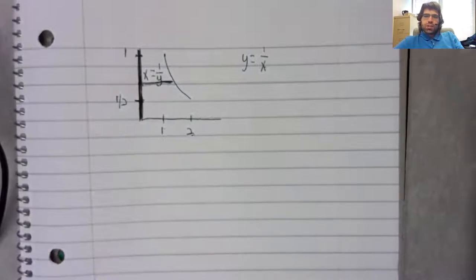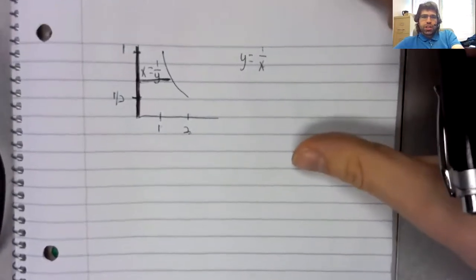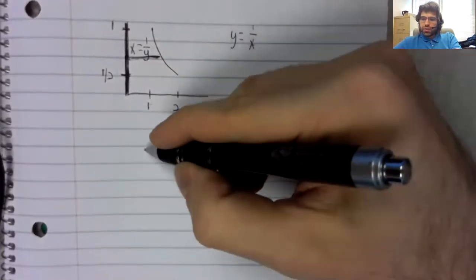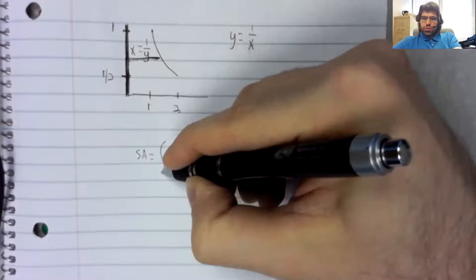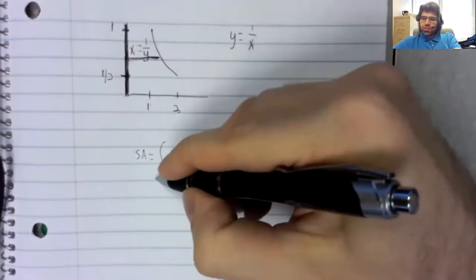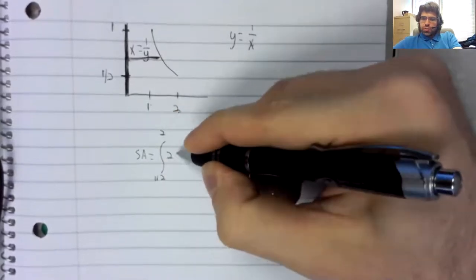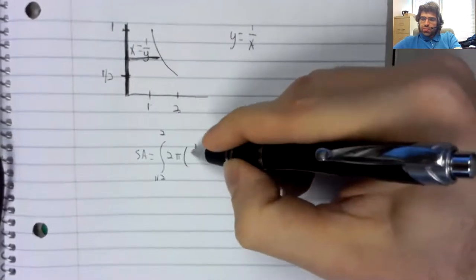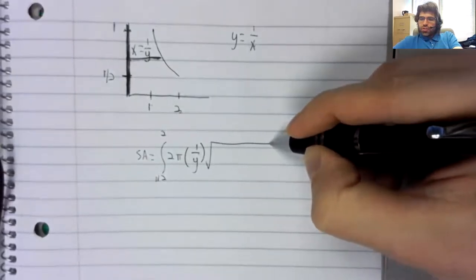The surface area formula, this should be pretty plug and play, although we will need to take a derivative. The surface area is the integral. We found our limits of integration of 2 times pi times the radius, 1 over y, times the square root of 1 plus the derivative of this squared.